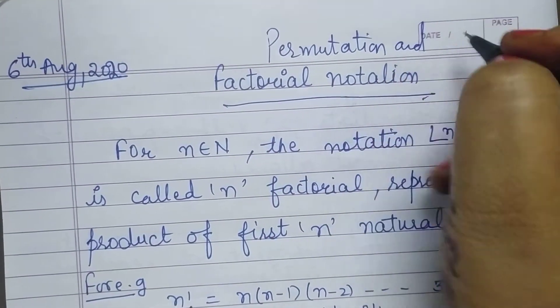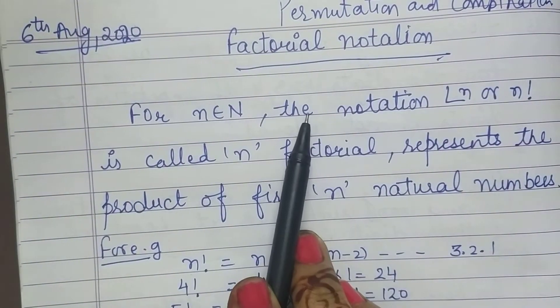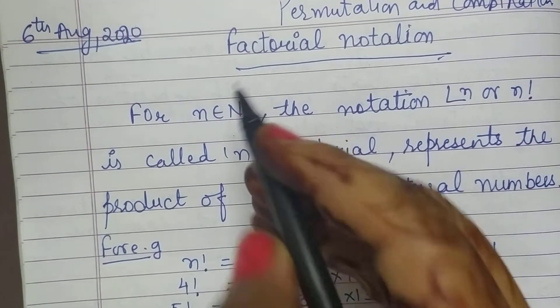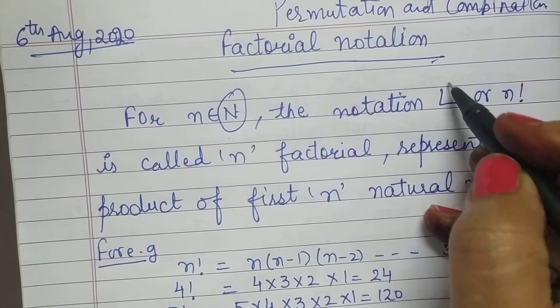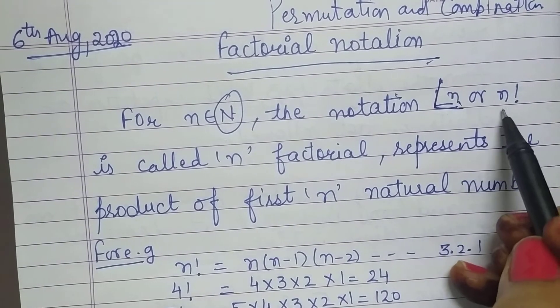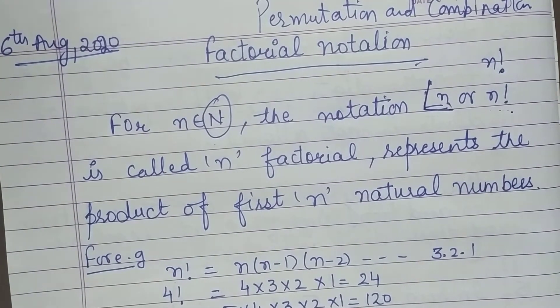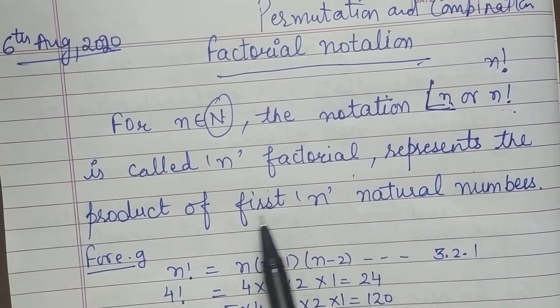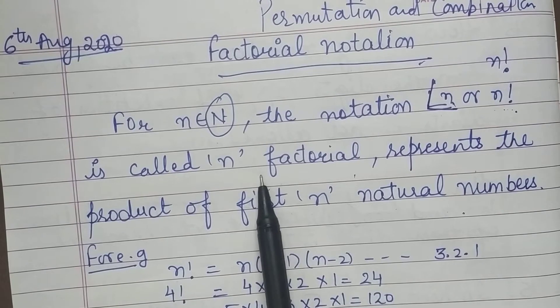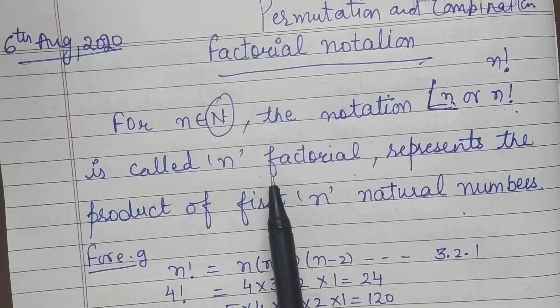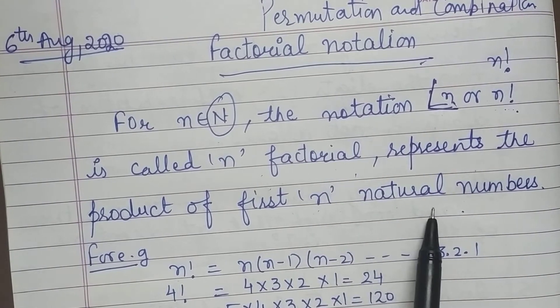Now I will move to the next topic that is factorial notation. So what is factorial notation? I just tell you, for n belongs to natural numbers. Here this n is a natural number. The notation, you can write n factorial this way or n with an exclamatory sign. It is called n factorial, representing the product of first n natural numbers.